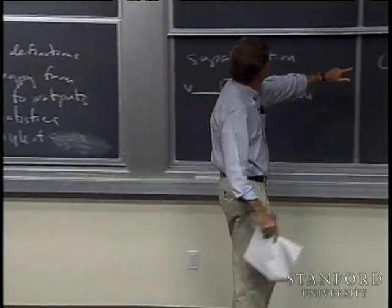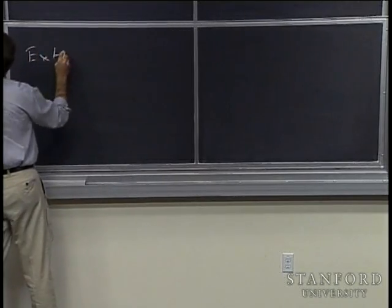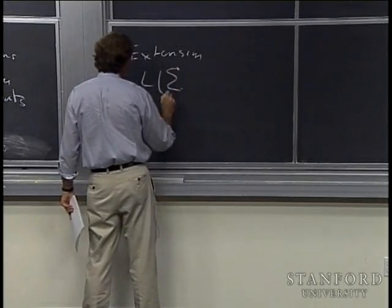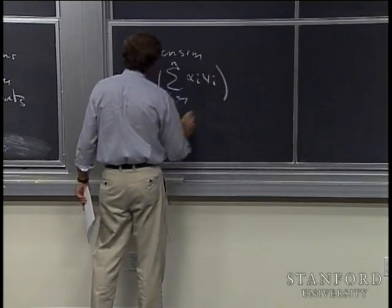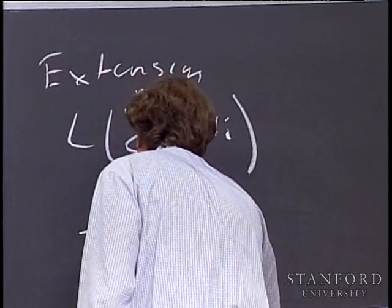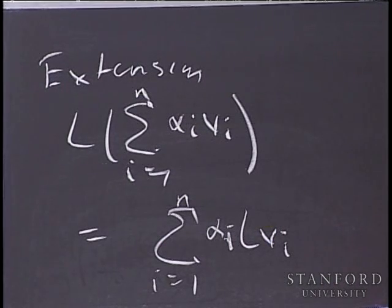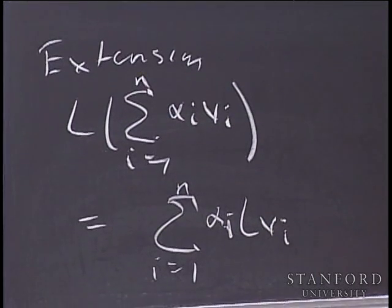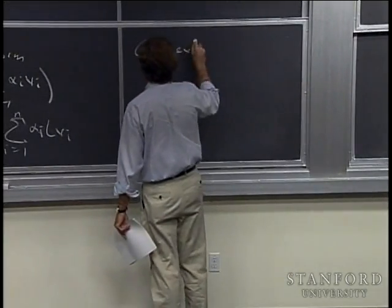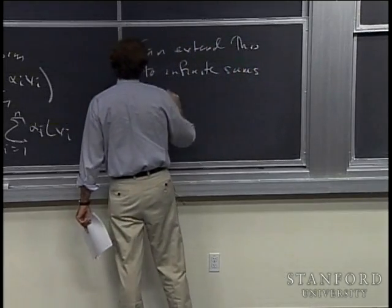As an extension, for finite sums, L applied to the sum of alpha_i times v_i (i=1 to n) equals the sum of alpha_i times L(v_i) — a linear combination of inputs goes to a linear combination of outputs. It's also true in most cases that this extends to infinite sums, but any time you deal with infinite sums you have to deal with questions of convergence and extra properties of the operators.